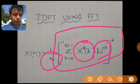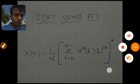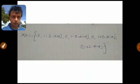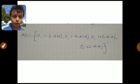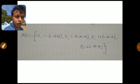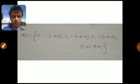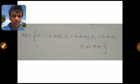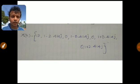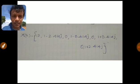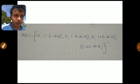This is the question. X of k is given as: 12, 1 minus 2.414j, 0, 1 minus 0.414j, 0, 1 plus 0.414j, 0, 1 plus 2.414j. So there are 8 sample points given. To this, we have to find the inverse discrete Fourier transform, that is x of n, through any one of the techniques — either by using DIT or using DIF.